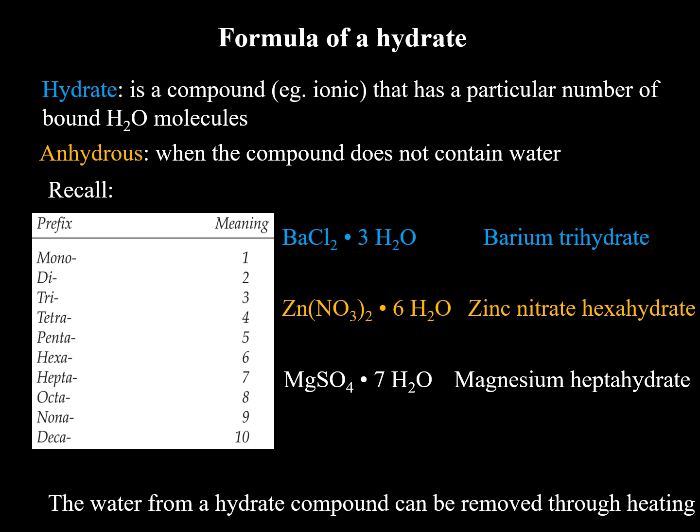Here are some examples below. We have barium chloride trihydrate, so we have three water molecules attached to the barium chloride. In this case, we have six water molecules attached to the zinc nitrate, and we have seven water molecules attached to the magnesium sulfate, so we would call this magnesium heptahydrate.